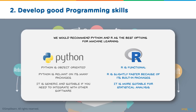Here are a few things you need to know about Python and R. Python is an object-oriented language, meaning the main emphasis is on the object. R is a functional language, meaning the emphasis is on creating and manipulating functions. Python relies on its many packages, while R is slightly faster because it has inbuilt packages. Python is generic and suitable for integration with other software, whereas R works more closely with statistical analysis.